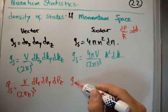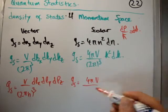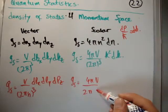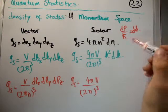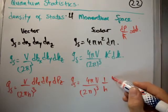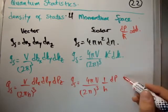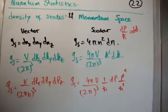And over here g_s is equal to 4πV over (2π)³. Now we're going to have dk which is going to be 1 over ℏ dp. And we're going to have this factor of k² which is going to be p² over ℏ². Okay.